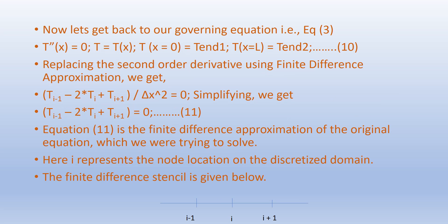Now let's return to our governing equation: d²T/dx² = 0, where T is a function of x, with T(0) = T₁ and T(L) = T₂. Replacing the second-order derivative using the finite difference approximation, we get (Tᵢ₋₁ − 2Tᵢ + Tᵢ₊₁) / Δx² = 0. Simplifying, we get Tᵢ₋₁ − 2Tᵢ + Tᵢ₊₁ = 0, where Tᵢ₋₁ corresponds to f(x − Δx), Tᵢ to f(x), and Tᵢ₊₁ to f(x + Δx). This is the finite difference approximation, where i represents the node location on the discretized domain. The finite difference stencil is also shown.